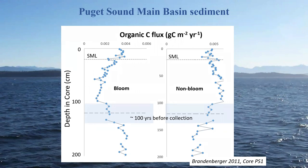This is one core shown in two different ways. Previously, when looking at total productivity over time, the two marine end members were summed. This time they're separated out — the bloom marine end member flux and the non-bloom marine end member flux are both plotted from the sediment core collected at the south end of the main basin of Puget Sound.